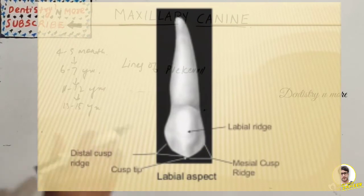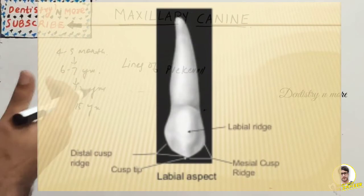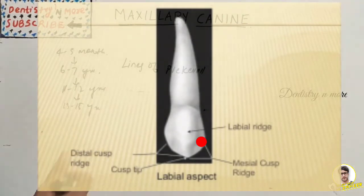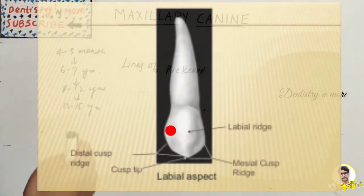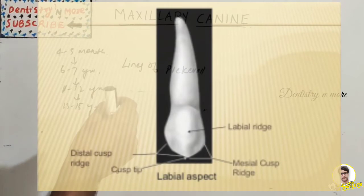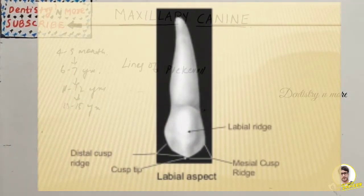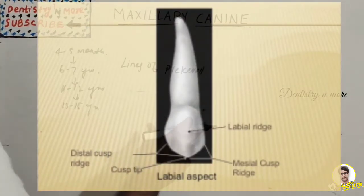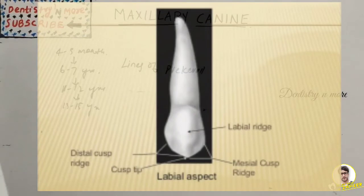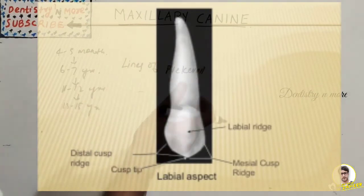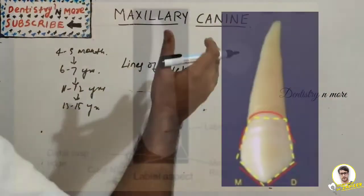The height of contour on the mesial side is at the junction of the incisal and middle third. The distal margin is shorter than the mesial margin with a more rounded incisal angle, and the height of contour is at the middle third. The incisal margin is divided by the cusp tip into the mesial and distal cusp ridges. The labial surface is convex in all directions, with more pronounced mesiodistal curvature, and the general shape is pentagonal.